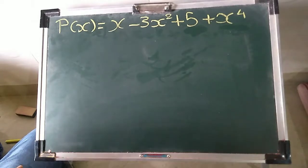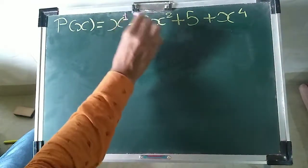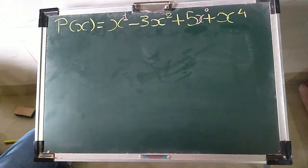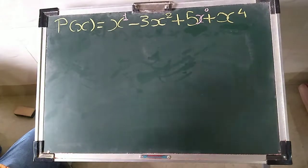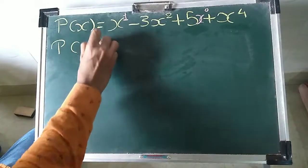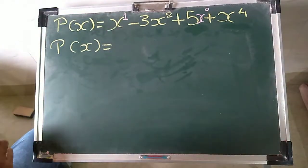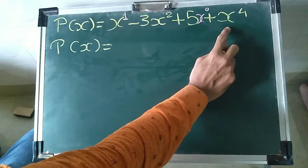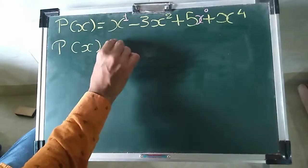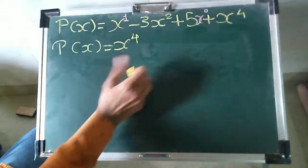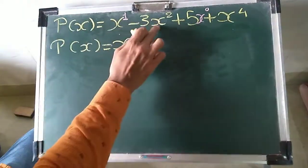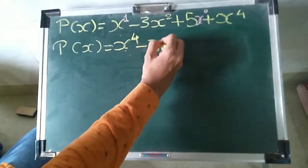If you observe, this polynomial is not arranged in a good way — first power 1, then power 2, then power 0, then power 4. If I want to rearrange this and write it in a standard way, I will write the highest power first. The highest power is x raised to 4, so I write x raised to 4 first. The next highest power is 2, so I write the entire term minus 3x squared next.